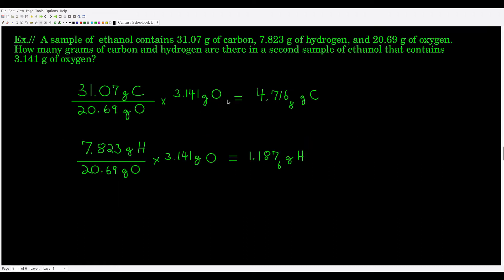A useful way of applying the law of constant proportions: suppose we have a sample of ethanol that contains 31.0 grams of carbon, 7.823 grams of hydrogen, and 20.69 grams of oxygen. How many grams of carbon and hydrogen are in a second sample of ethanol that contains 3.141 grams of oxygen? In the first sample, there are 31.07 grams of carbon per 20.69 grams of oxygen. Multiplying by 3.141 grams of oxygen, the oxygen units cancel, giving about 4.717 grams of carbon in the second sample.